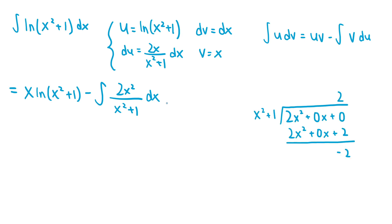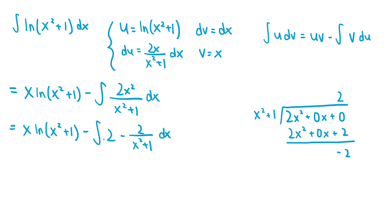If we go ahead and do the polynomial long division, dividing the numerator 2x² by the denominator x² + 1, the quotient turns out to be 2, and we're left with a remainder of negative 2. So we can rewrite the rational function 2x² over (x² + 1) as the quotient plus the remainder divided by the divisor, which is 2 minus 2 over (x² + 1). So this expression becomes x·ln(x² + 1) minus the integral of 2 minus 2 over (x² + 1) dx.